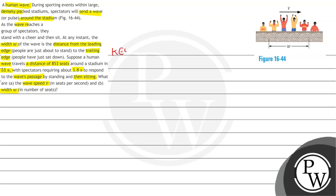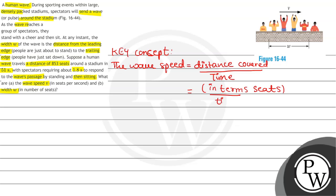So the key concept in this question is the wave speed is equal to distance covered divided by time. In this case my distance covered in terms of number of seats divided by time.